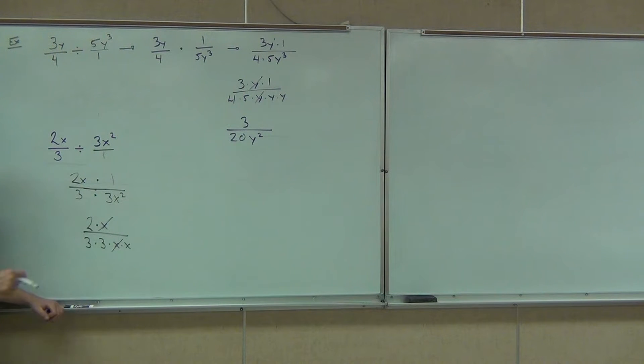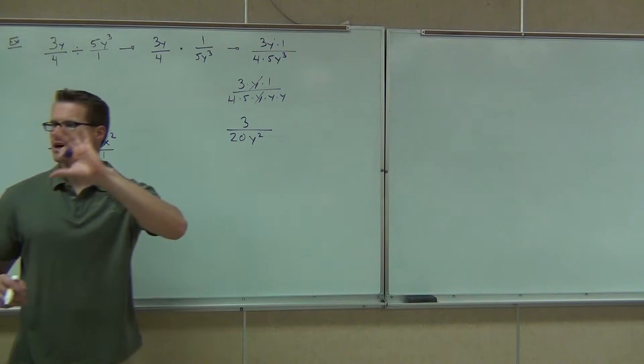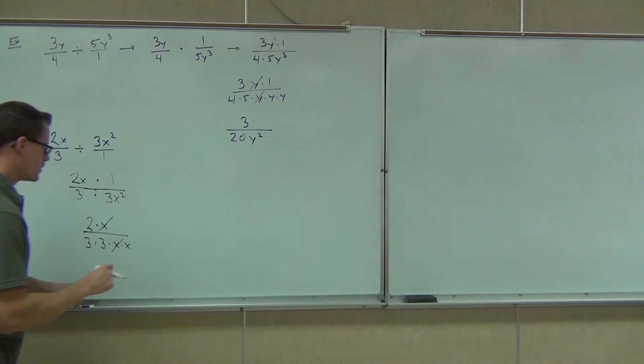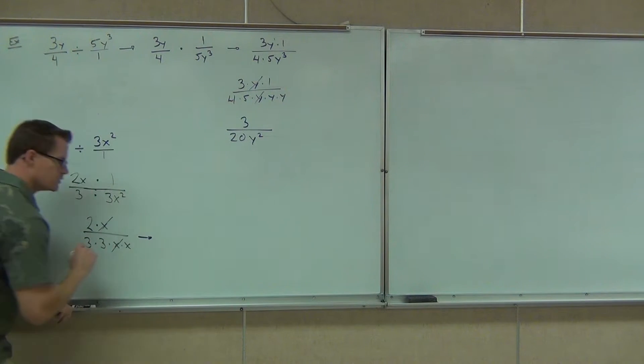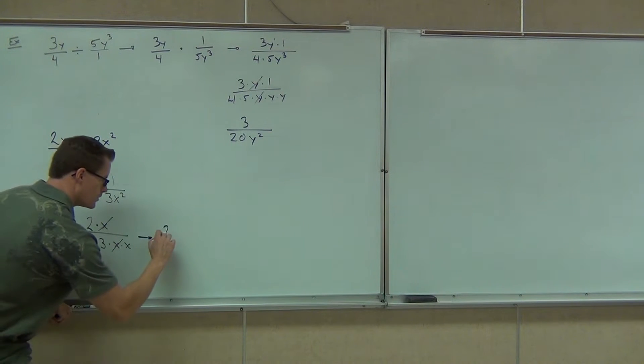We cross out our x's here. There's only one pair that match up on our numerator and denominator. That's the common factor there. What's our new numerator? 2. Good. 2 over 9x.